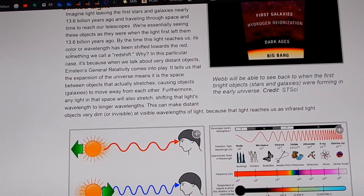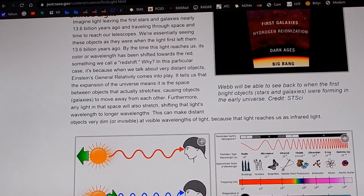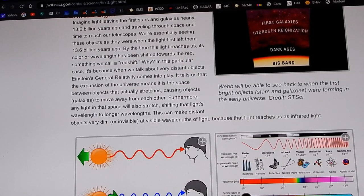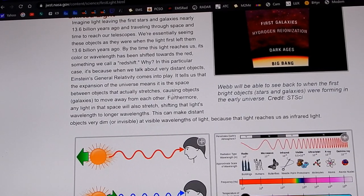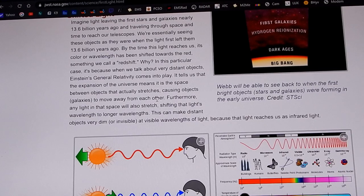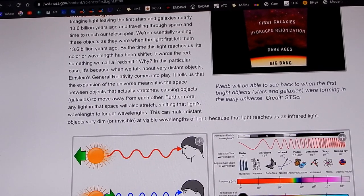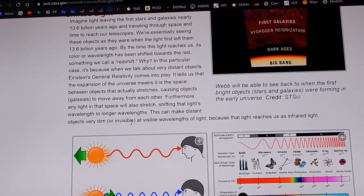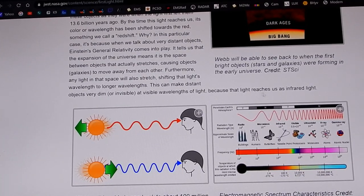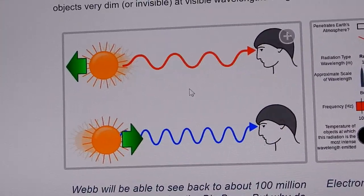So it goes on here. By the time the light reaches us, its color or wavelength has been shifted towards red, something called the redshift. Why? In this particular case, it's because when we talk about very distant objects, Einstein's general relativity comes into play. It tells us that the expansion of the universe means it is the space between objects that actually stretches, causing objects or galaxies to move away from each other. Kind of think of a firework exploding, going in all directions. Furthermore, any light in space will also stretch, shifting that light's wavelength to longer wavelengths. This can make distant objects very dim, because now you're coming out of the visible, right? You're going into near-infrared. We can't see that with our eye.